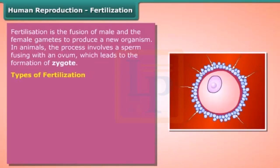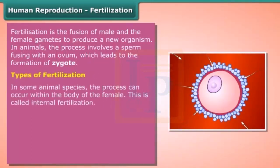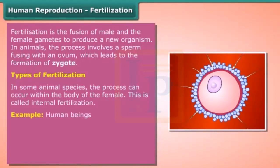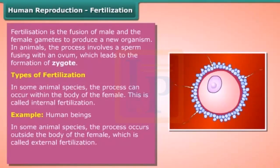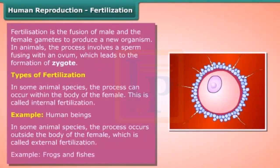There are two types of fertilization. In some animal species, the process occurs within the body of the female — this is called internal fertilization, for example in human beings. In some species, the process occurs outside the body of the female — this is called external fertilization, for example in frogs and fishes.